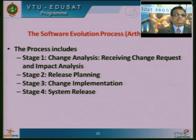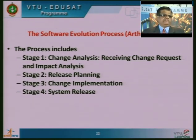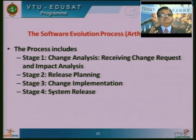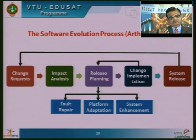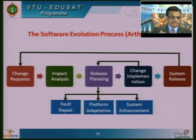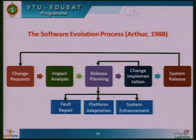The software evolution process works in four stages as proposed by Arthur in 1988. First is change analysis — receiving change requests and performing impact analysis. Second is release planning. Third is change implementation. Fourth is system release. After change analysis, release planning addresses fault repair, platform adaptation, or system enhancement, followed by change implementation and system release.